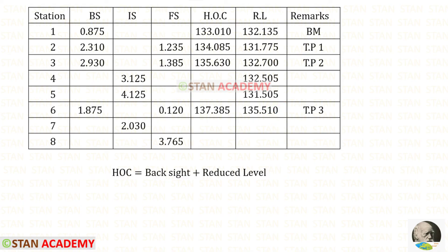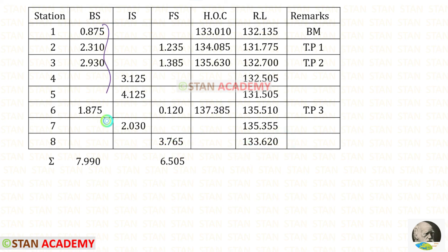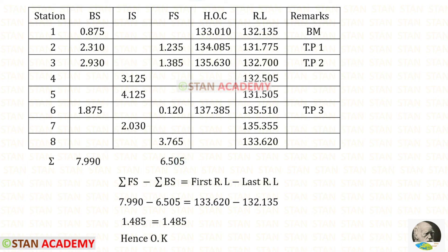At station 6 there is a new back sight, so we find a new height of collimation by adding the back sight with the reduced level. Then we find the reduced levels for stations 7 and 8. We add all back sights and all foresights, then apply the check: the difference between summation of foresight and back sight should equal the difference between the first and last reduced level. Both values are the same — hence, the check is satisfied.